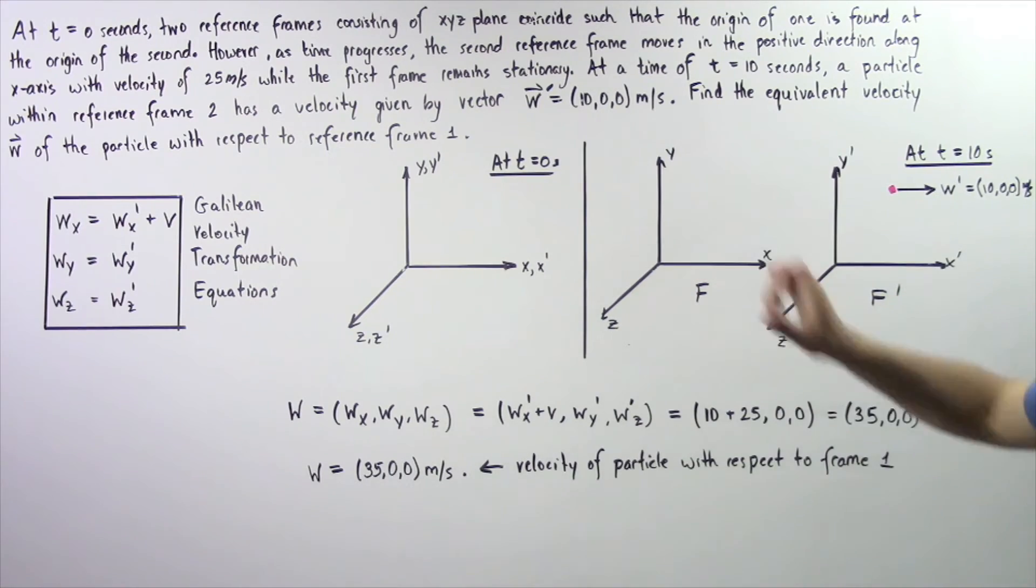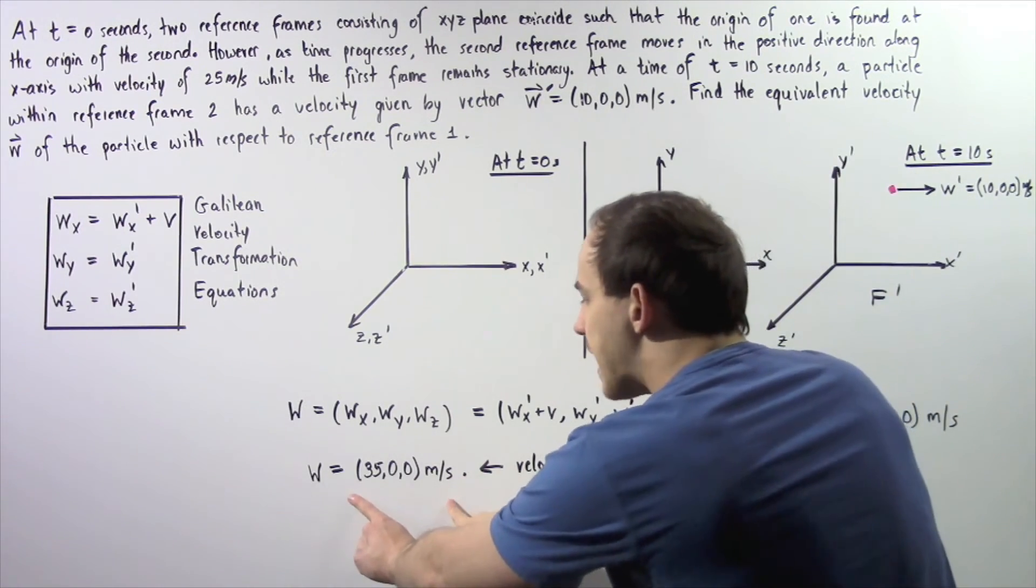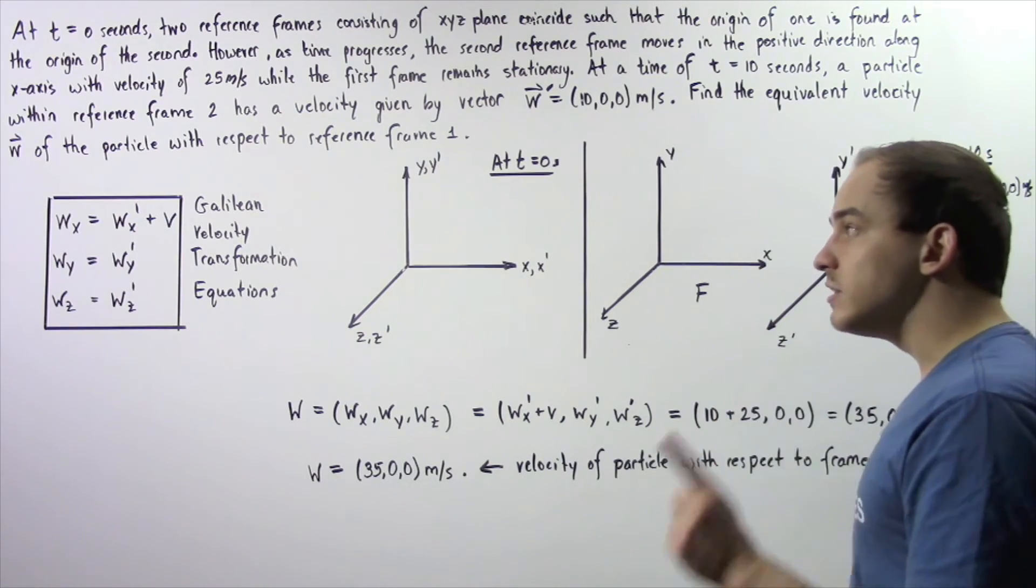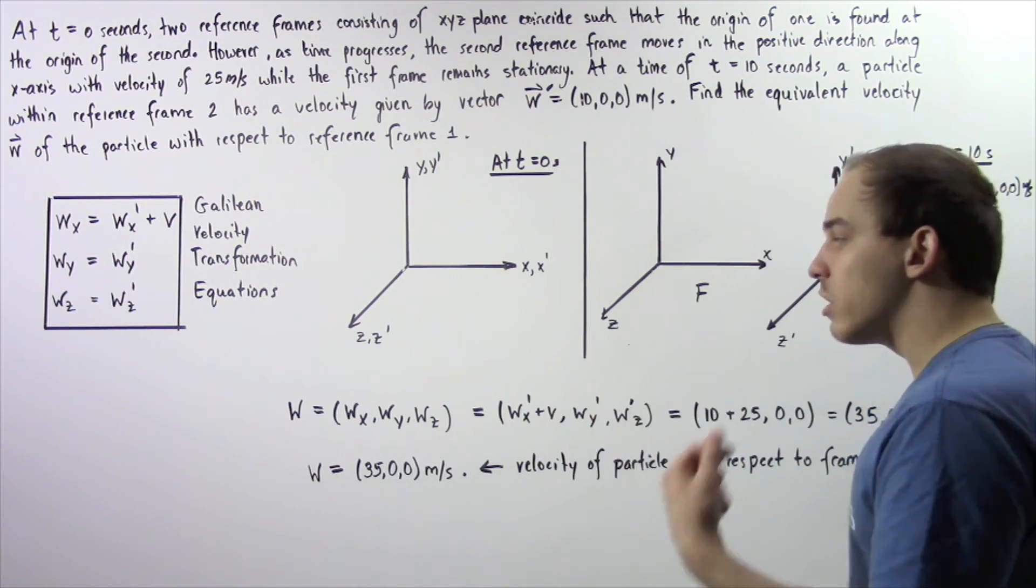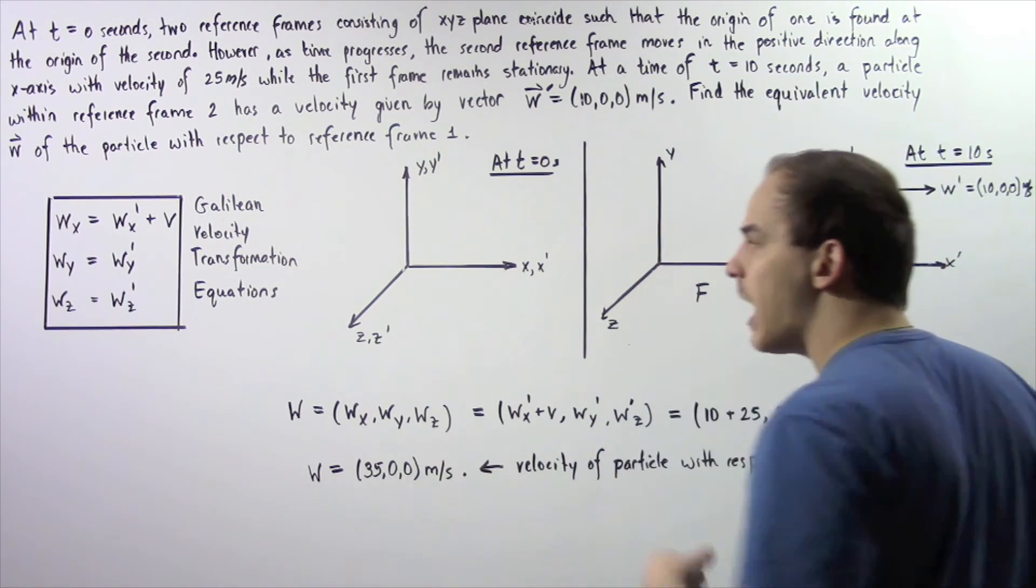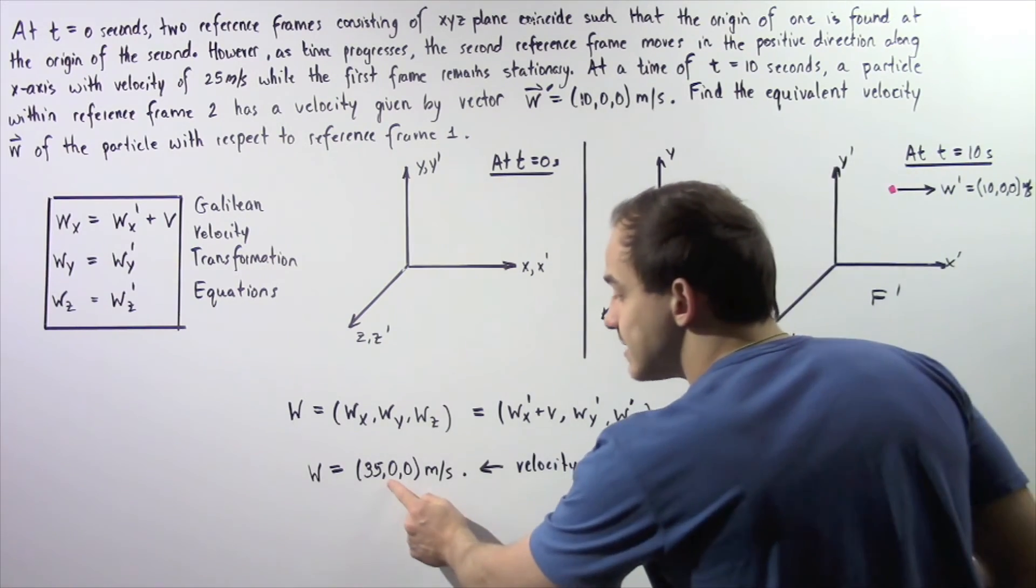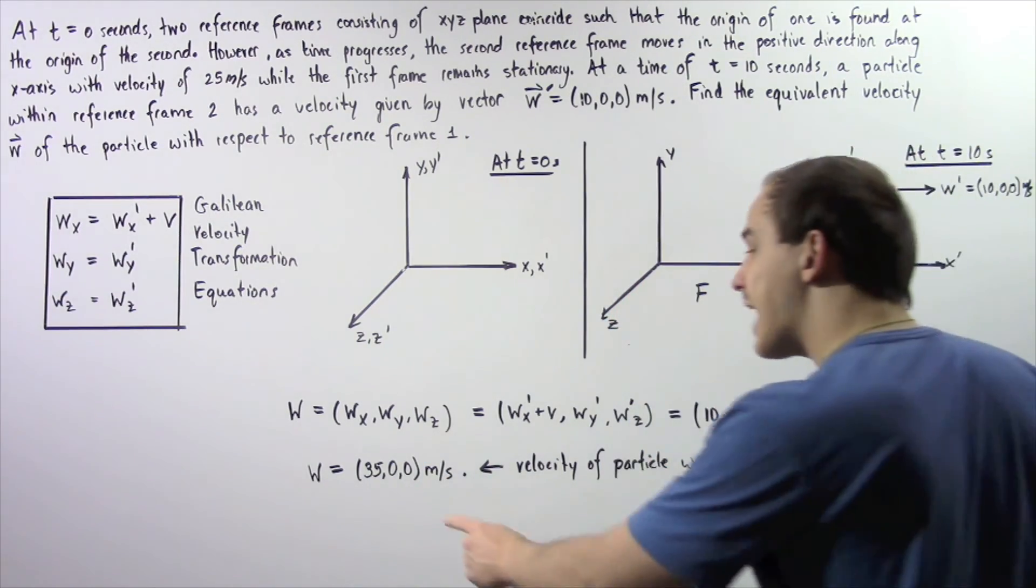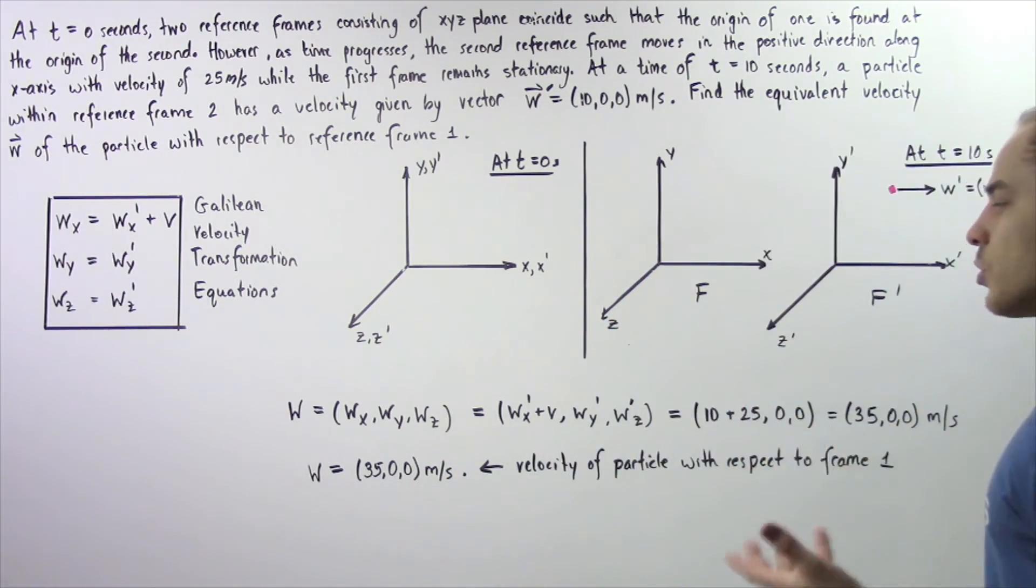So the vector that represents the velocity of the particle within frame one given by f is this vector. So the velocity of the particle along the x axis is 35, along the y axis is 0, and along the z axis is 0 meters per second.